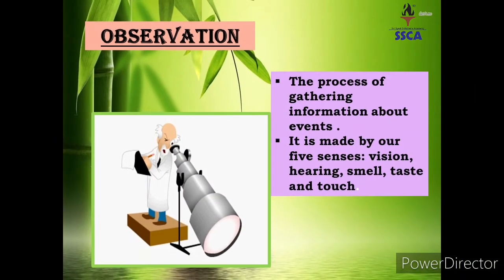What is meant by observation? Most of the biological investigations start from observation. Observation is the process of gathering information about events. In observation ہم جتنی بھی information ہے اس problem سے related اس کو collect کرتے ہیں different resources کے ذریعے۔ اور وہ observation ہم کن senses کو utilize کرتے ہوئے کرتے ہیں: vision، hearing، smell، taste and touch۔